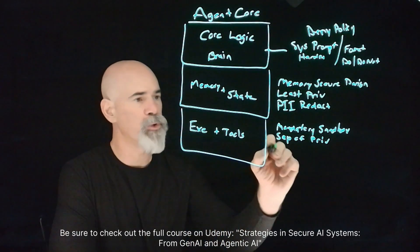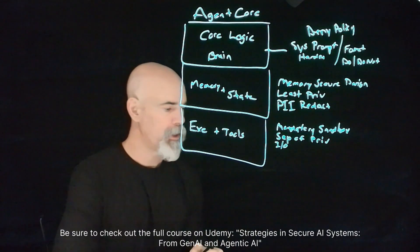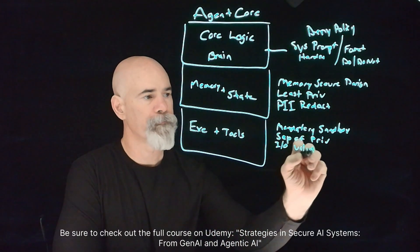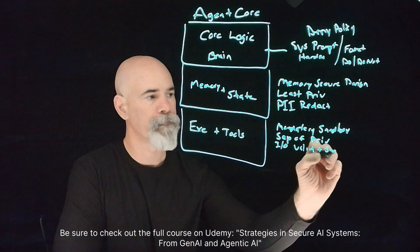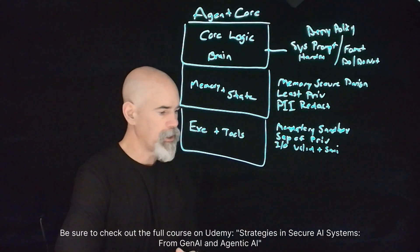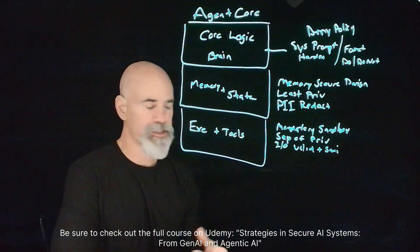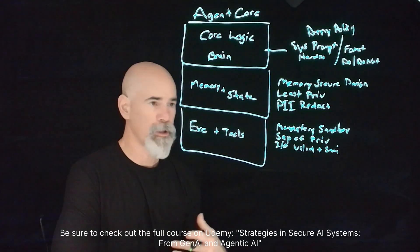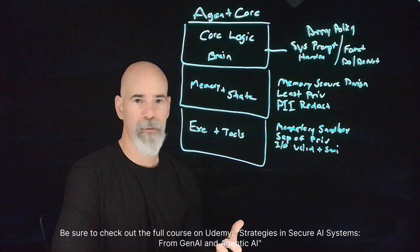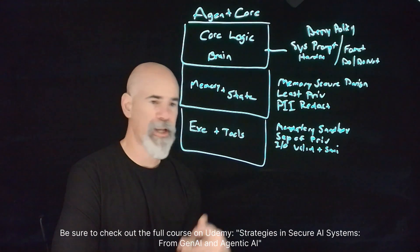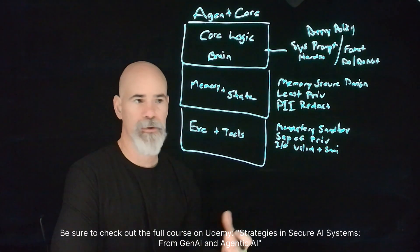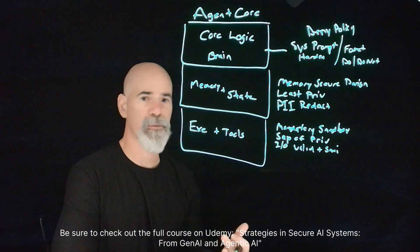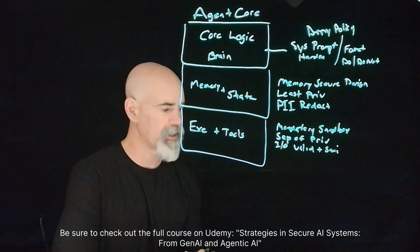We want to have input/output validation and sanitization. We want to treat all outputs from the LLM as untrusted, and likewise from the user as well. We don't want to explicitly trust anything coming from the user or the LLM — that goes back to our AppSec roots or software security roots. We always want to make sure that what comes from the end user is validated and sanitized.